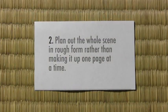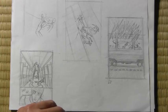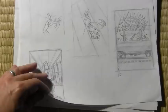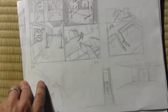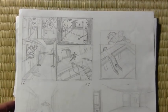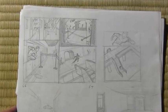Number two: plan out the whole scene in rough form rather than making it up one page at a time. I'm all for spontaneity, but in terms of action sequences, you're getting into very complex storytelling. So rather than just do one complete page and then move on to the next, I really think it's helpful to, at least in rough form, figure out what's going to be on each page.